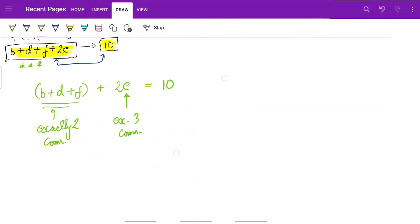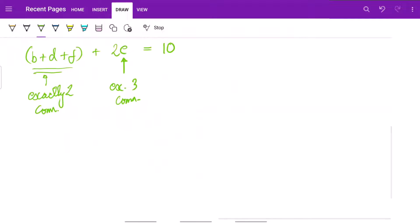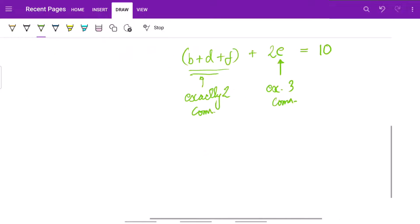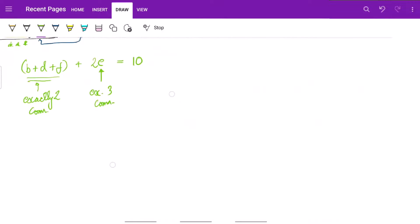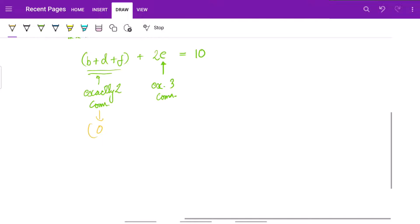So if we have to minimize, what we need to do is we need to minimize this value. So one way to do it is if we put this value as 0. So what happens, 0 plus 2e equals 10, this implies e equals 5.